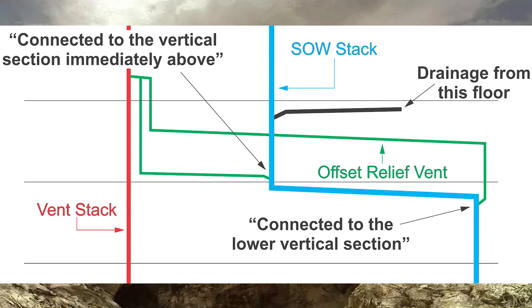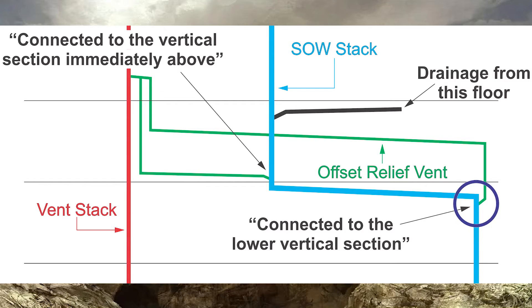The next part of that clause talks about where we take a vent off for the lower portion of the offset. There are two different options — let's look at both. Part A talks about connected to the lower vertical section at or above the highest soil or waste pipe connection. Looking at this picture, my offset turns down and goes vertical, and I'm just going to put a Y right underneath that point, just like I have in the picture here.